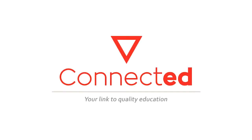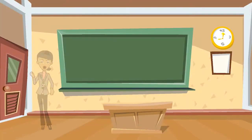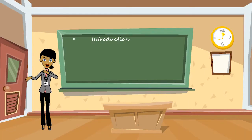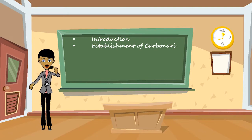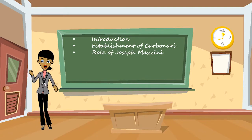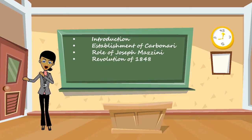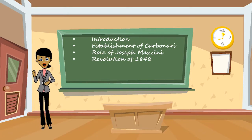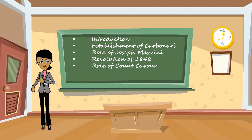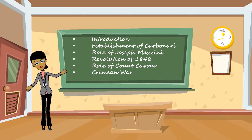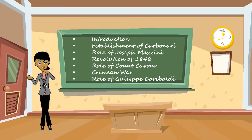Hello class, welcome to Connected. In this video we will talk about the unification of Italy. We will discuss the establishment of Carbonari, role of Joseph Mazzini, the revolution of 1848, role of Count Cavour, the Crimean War, and finally the role of Giuseppe Garibaldi.